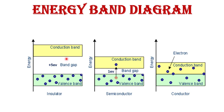So here, this is the valence band and this is the conduction band. The electron in the valence band is called valence electron and the electron in the conduction band is called free electron. This is the band gap energy, also called the forbidden energy gap.